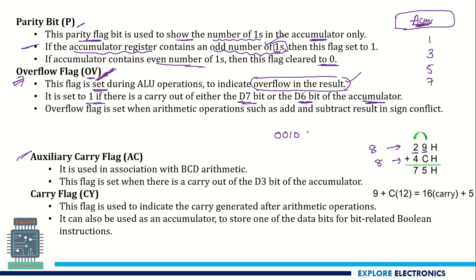9 will be represented as 1001. Similarly 4 and C. 4 will be represented like this. C in the sense A is 10, B is 11, C is 12. So 12 will be represented as 1100.